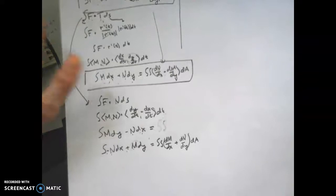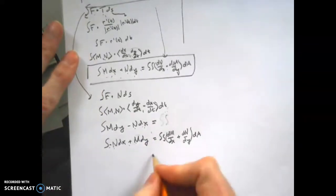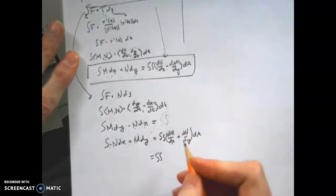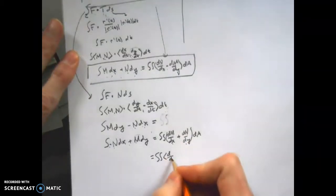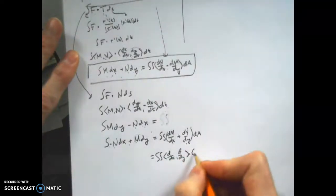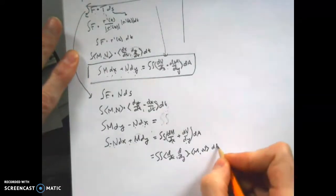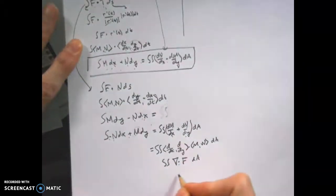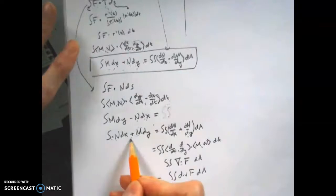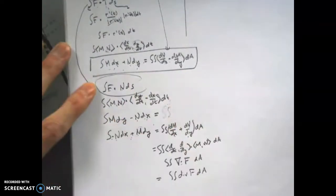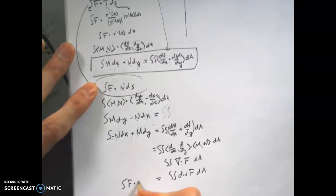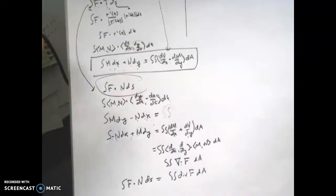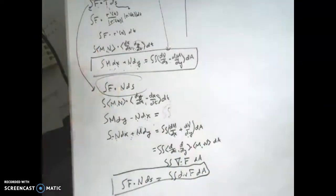And if you look at this, now this is becoming more interesting because this thing really is, well, you can think of this as the d/dx comma d/dy dotted with M N. That should look familiar. That's del dotted with your vector field. And del dotted with your vector field is the divergence of F. Which is equal to this thing, which remember what this was. It was this. It's the integral of F dotted with N dS.